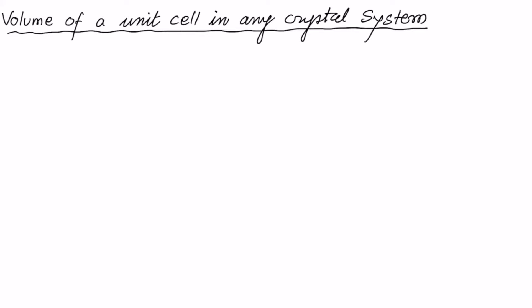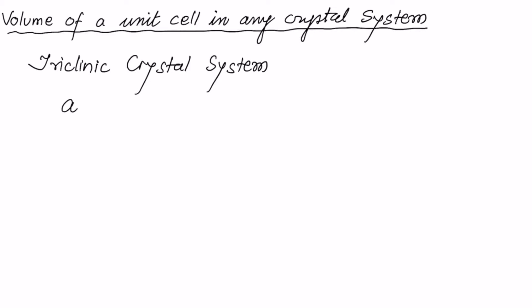In this video we will derive a formula for the volume of a unit cell in any crystal system. Let us consider the most general crystal system, that is the triclinic crystal system. In this system we have three lattice parameters: the three axial lengths are not equal and the three interaxial angles are also not equal. The unit cell is a parallelepiped based on these three lengths and angles.